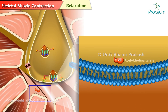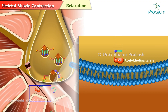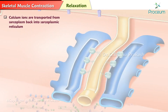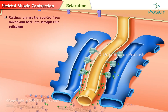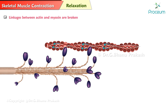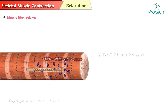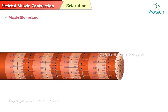Relaxation. Acetylcholinesterase is an enzyme present in the neuromuscular junction. It immediately destroys acetylcholine so the motor endplate is no longer stimulated. Calcium ions are transported from the sarcoplasm back into the sarcoplasmic reticulum. Linkages between actin and myosin are broken, and the muscle fiber relaxes.